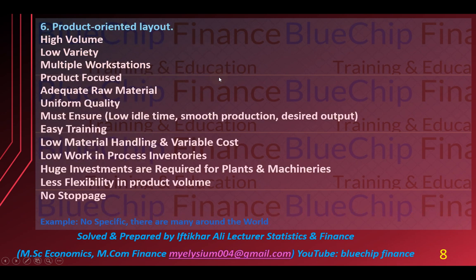Aakhir mein aata hai product oriented layout. Process oriented layout ke taqreeban ulat — is mein high volume manufacturing products hoti hain jabke process oriented layout ke andar low volume mein produce kiya jata tha. Is ke andar variety kam hoti hai — taqreeban ek hi type ki products taiyar ki jati hain. Multiple work stations is ke andar pai jate hain.